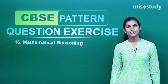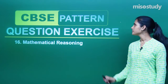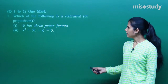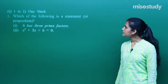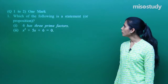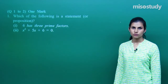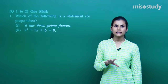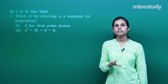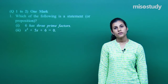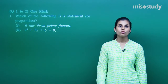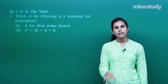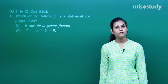Hi everybody, let's begin our discussion over the CBSE pattern question exercises for mathematical reasoning. The first question for one mark says: which of the following is a statement? For a statement, a sentence is declared to be a statement provided it holds a truth value. If it fails to hold the truth value, it is no more a statement. There should be no confusion or doubt regarding the truth value of that sentence.